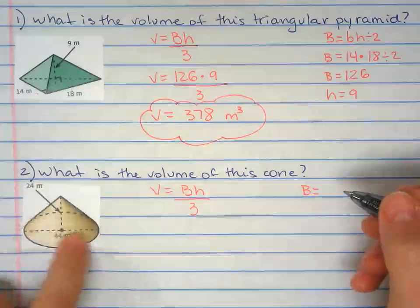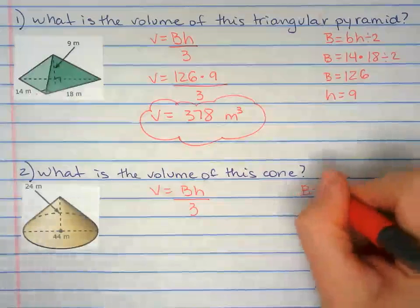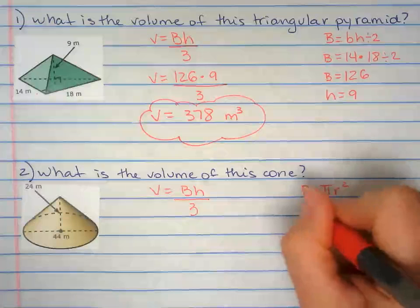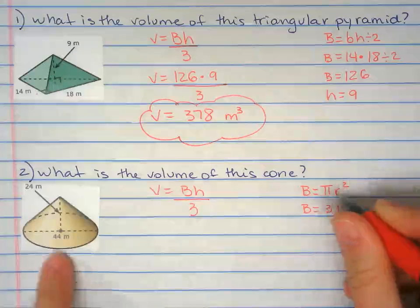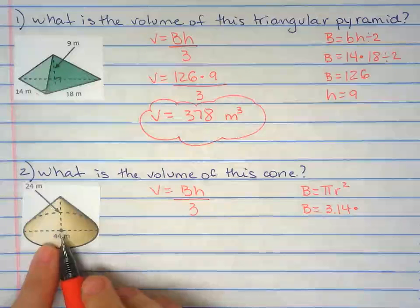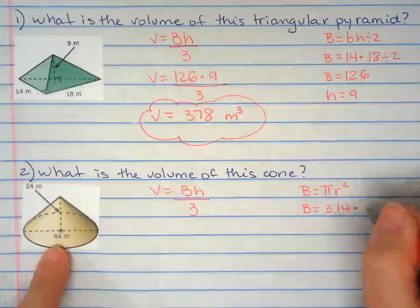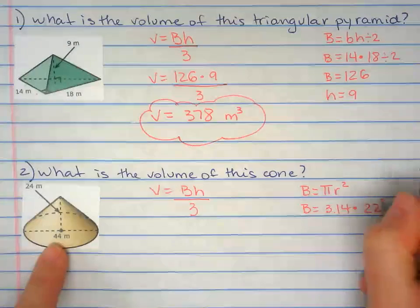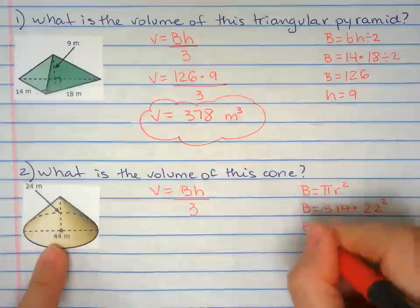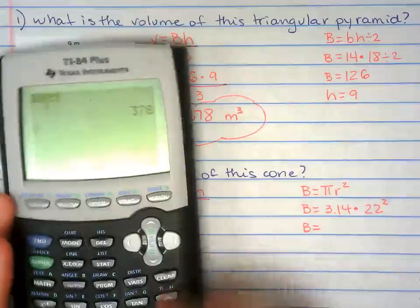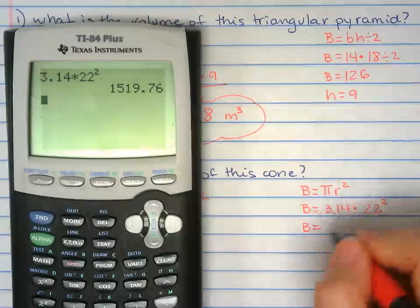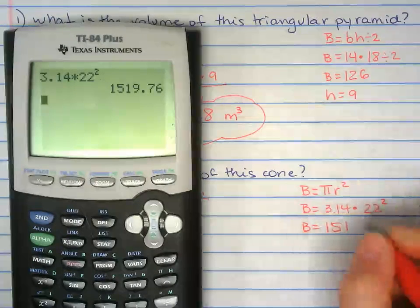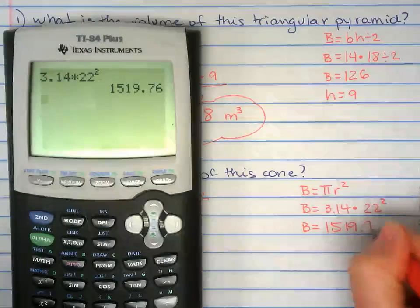The base over here is a circle. So pi r squared. We're going to use 3.14 for pi. The radius is half of the diameter. So if the diameter is 44, half of 44 is 22 squared. So the area of the base is 1519.76.